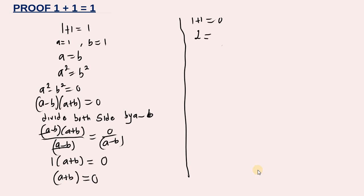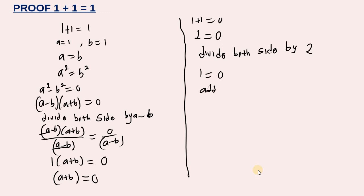Since one plus one is two, that means two is equal to zero. Now we divide both sides by two: two divided by two is one, and zero divided by two is zero. So one is equal to zero. Now I'm going to add one to both sides.